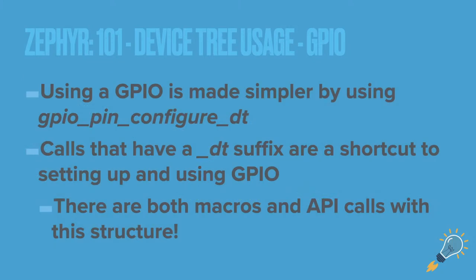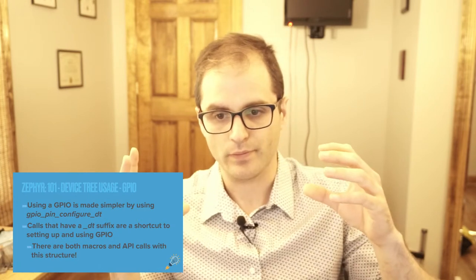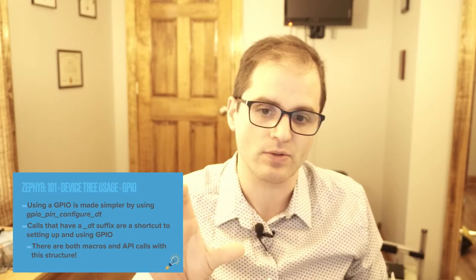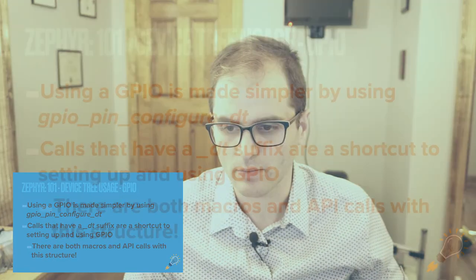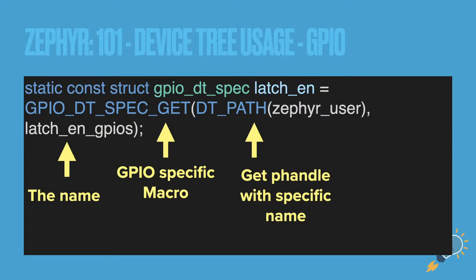Using GPIOs is made simpler by using the `gpio_pin_configure_dt` API. The only difference between these simplified APIs and the regular ones is just a suffix of `_dt`. You're referencing the device tree GPIO pin. We'll jump into how to use that, but it has that `_dt` suffix and we're using both macros and API calls. There's a `GPIO_DT_SPEC` which gets the pin and port all at once.